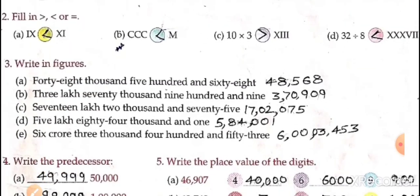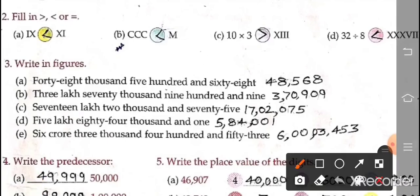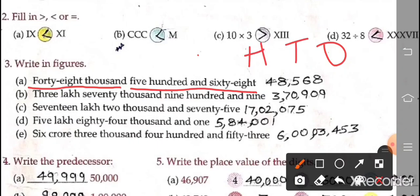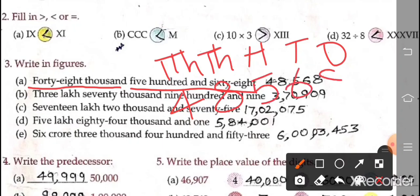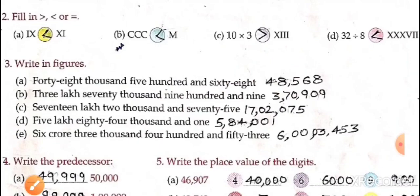Now question number 3: write in figures. Part A: 48,568. Arrange as ones, tens, hundreds, thousands, ten thousands. Then write 48,568. So like this we have to do — this is review worksheet, so you have to do it yourself.